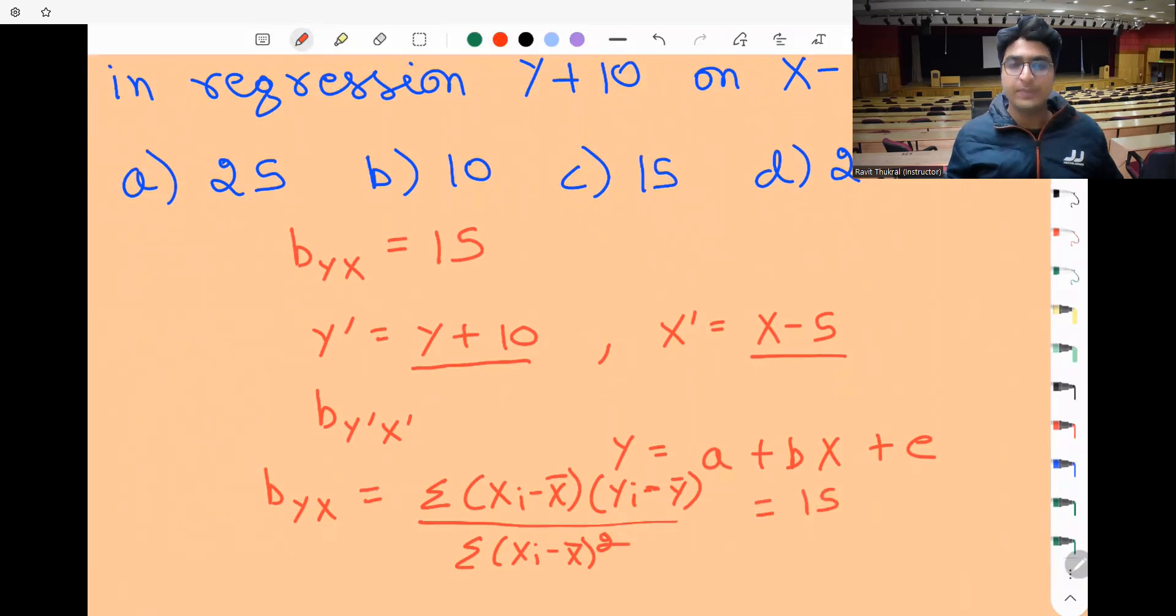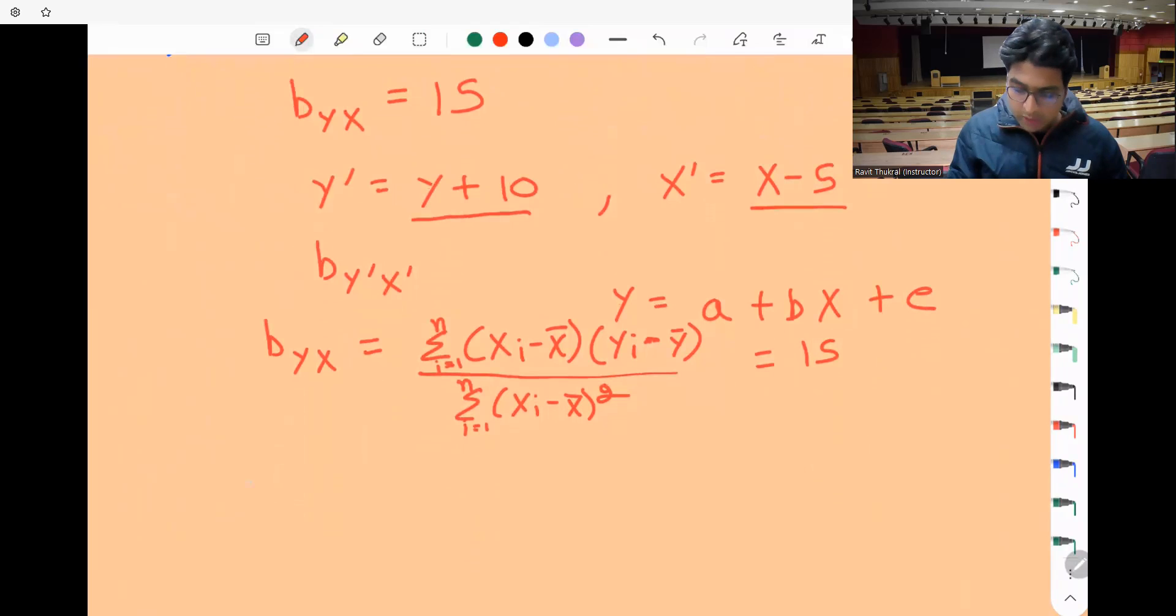This equals 15, and this summation goes from the first observation till the nth observation. So this is 15.